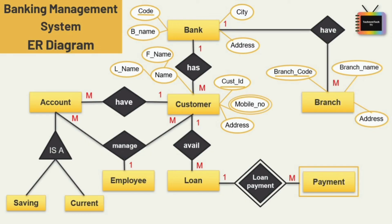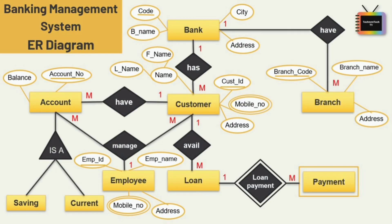For the account entity, we have two attributes: account number and balance. Account number is the key attribute. Next, for the employee entity, we have four attributes: employee ID, employee name, mobile number, and address. Employee ID is the key attribute here.